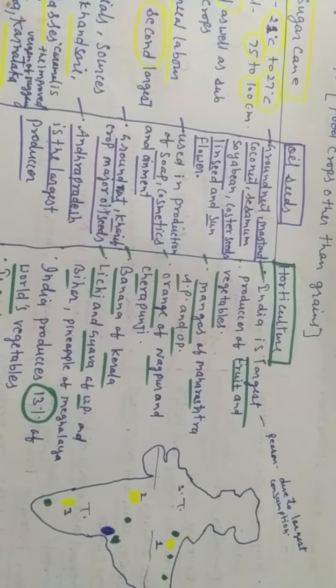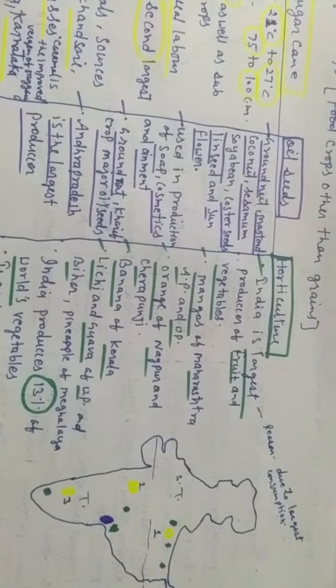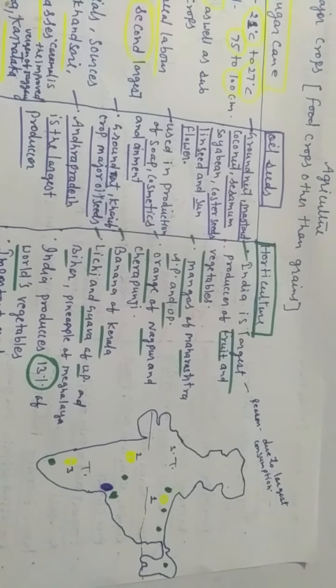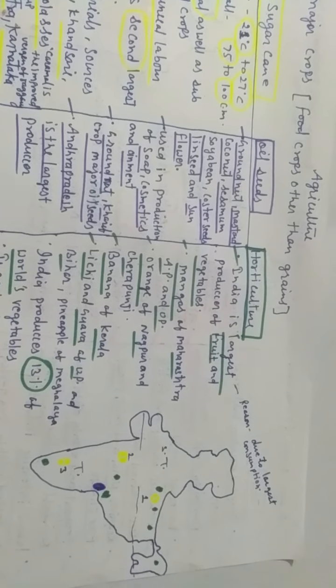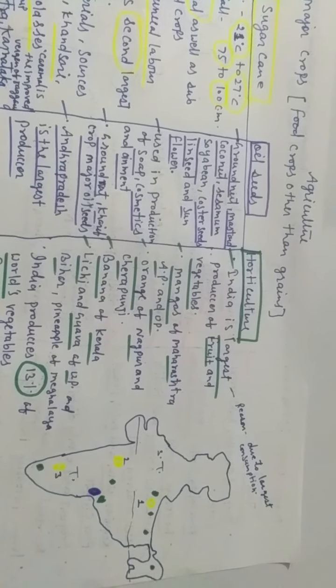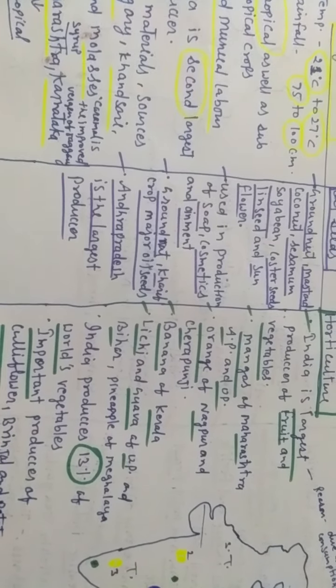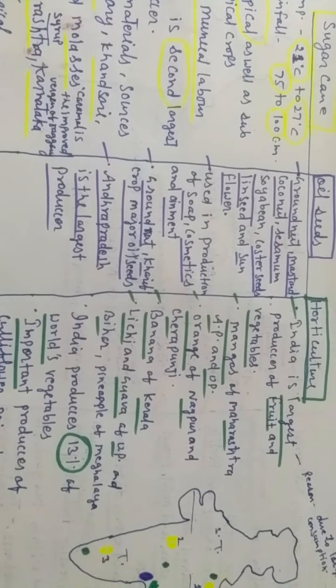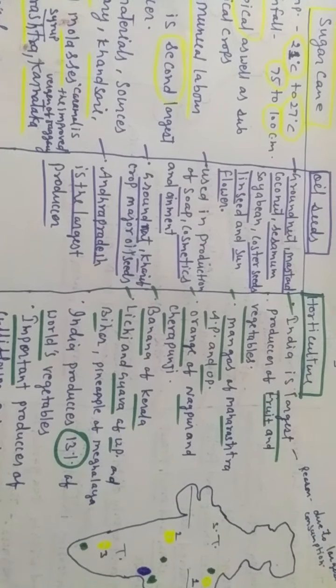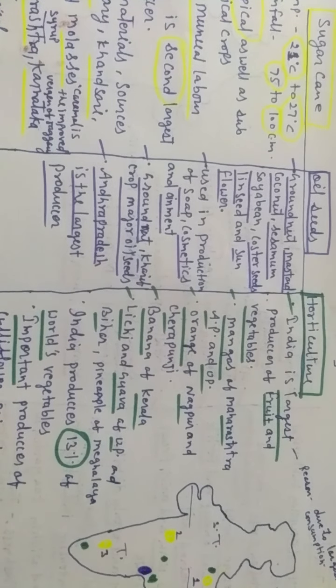Our next topic is horticulture. India is the largest producer of fruit and vegetable because India is the largest consumer of fruit and vegetable. Some important food crops, especially fruits, we get from Maharashtra, Andhra Pradesh, and UP. These include mangoes.